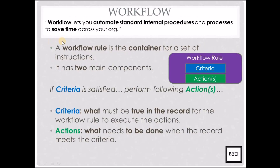So what is a workflow rule? A workflow rule lets you automate standard internal procedures and processes that a user does in your org, which hence also saves time. A key thing to note is that a workflow rule is a container with two main components: a criteria and multiple actions. Whenever a criteria is satisfied, multiple actions are executed. A criteria is what must be true on the record for the workflow to execute, and an action is what needs to be done when the record meets a criteria.